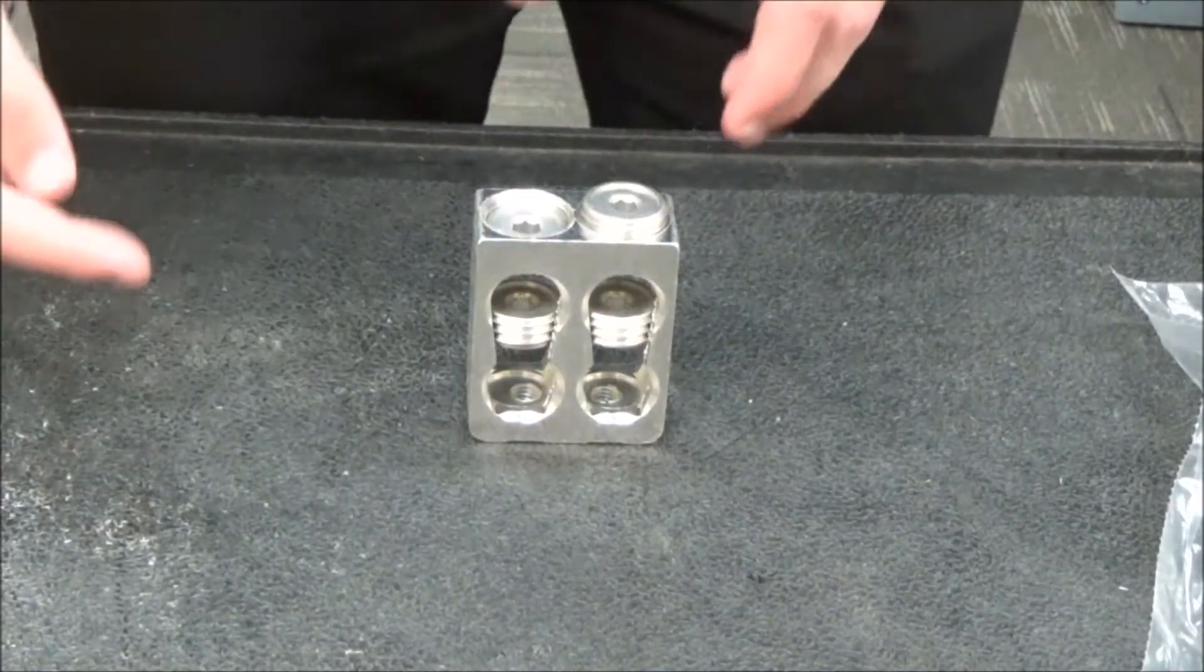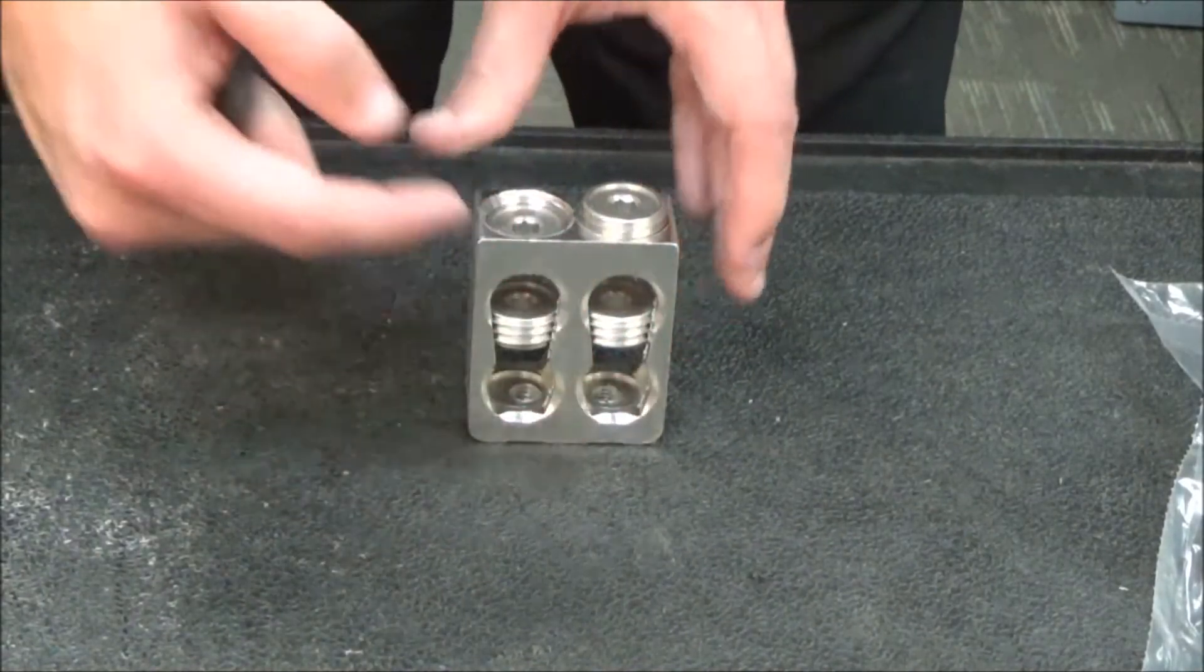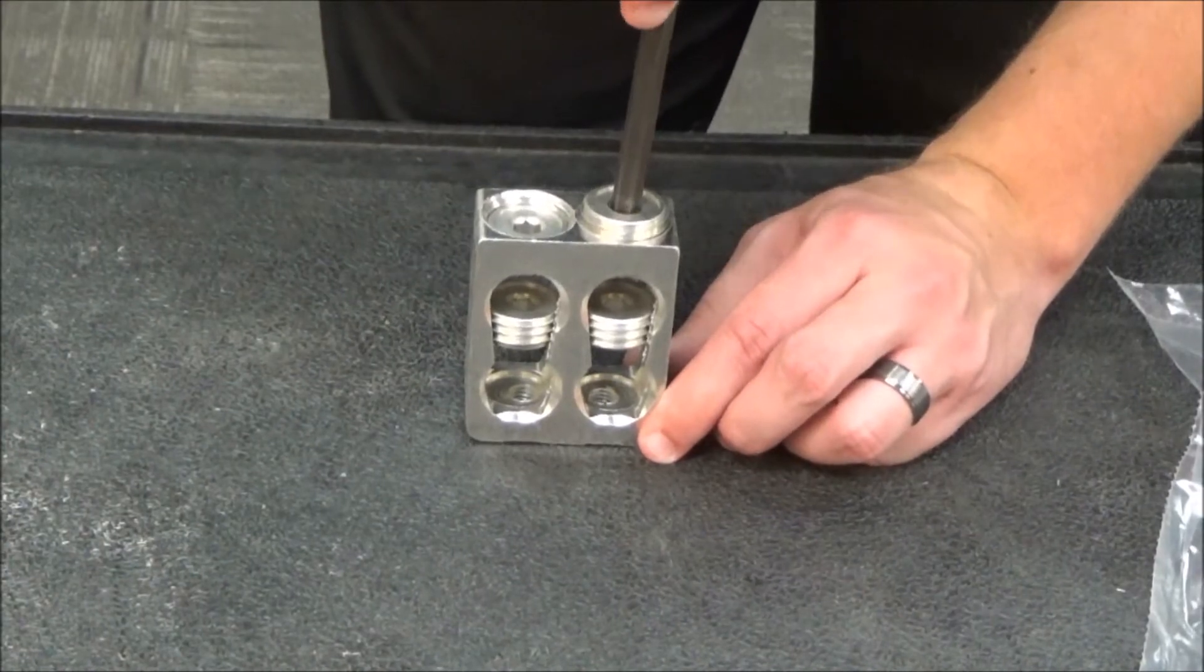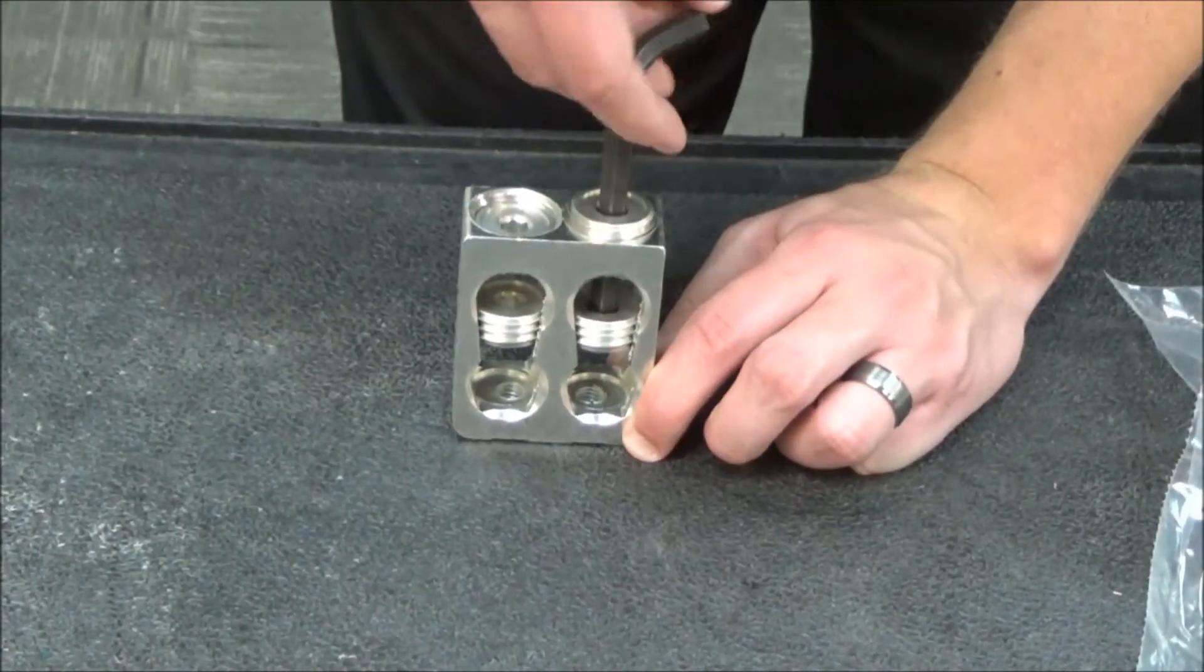Then you would bring your bottom wire in and put it under the bottom wire binding screw, then take the Allen wrench and put it all the way through so that it reaches the bottom wire binding screw and tighten.